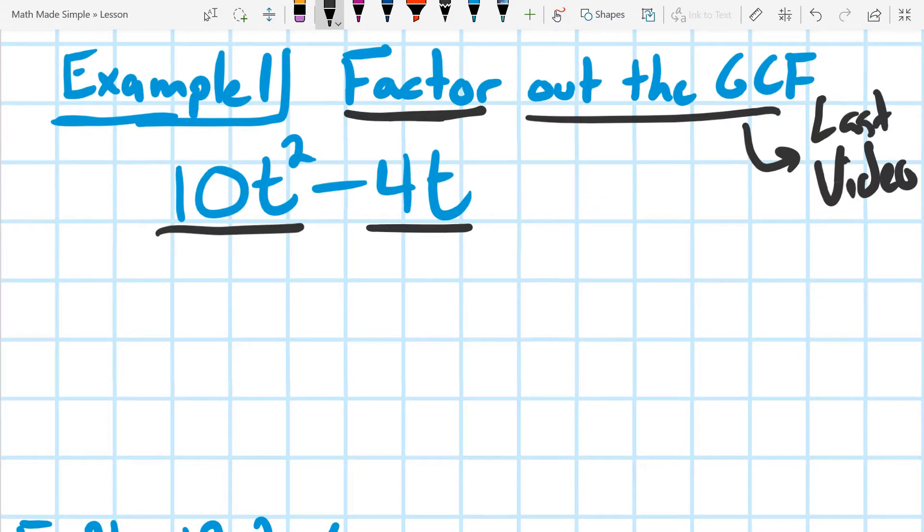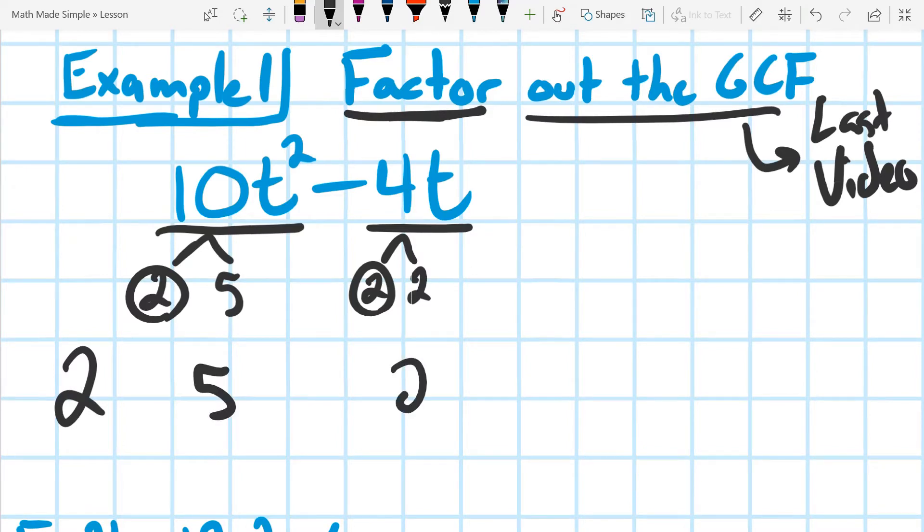So I'm going to look at the numbers first, and it looks like the biggest number I can get out of either of these is going to be a 2, because 10 is 2 times 5, and 4 is 2 times 2. So I'm going to take out the 2, and if I do that, what I'd be left with would be a 5 right here and a 2 right here. So you can see that I've canceled out a 2 out of both of those.